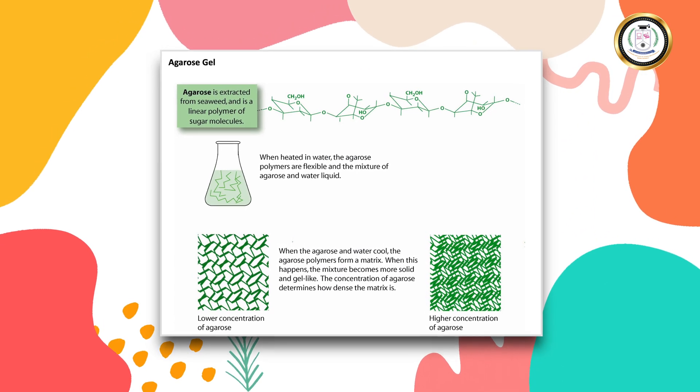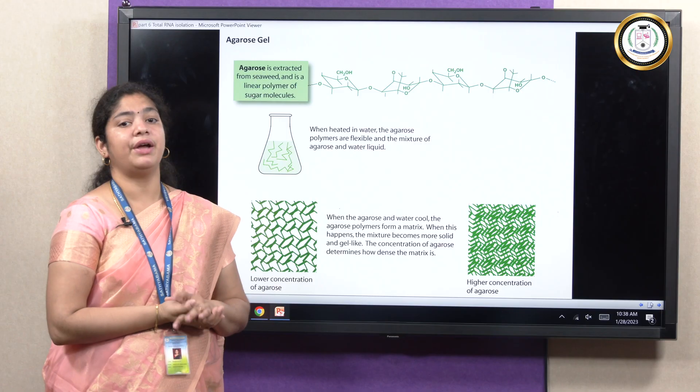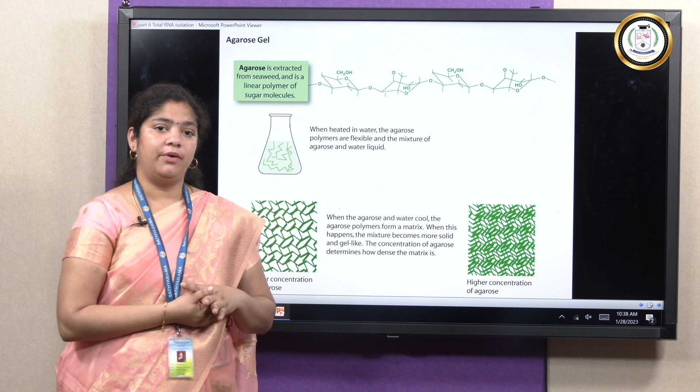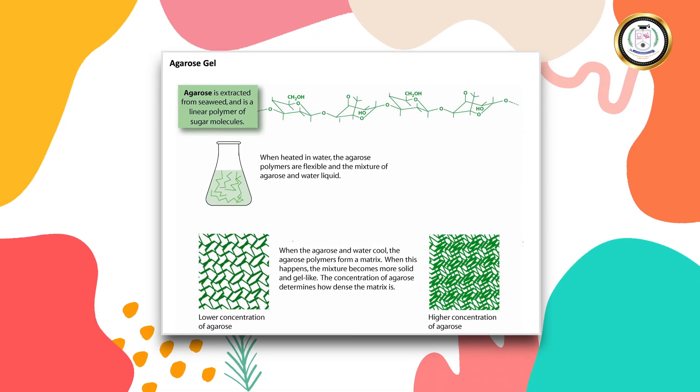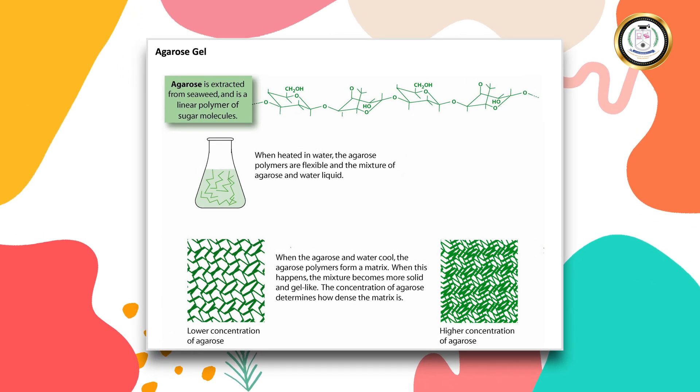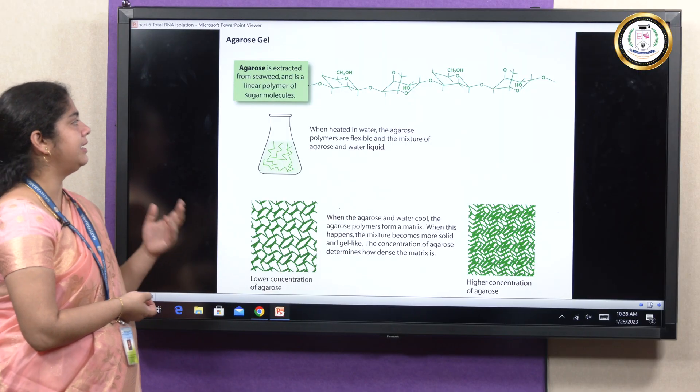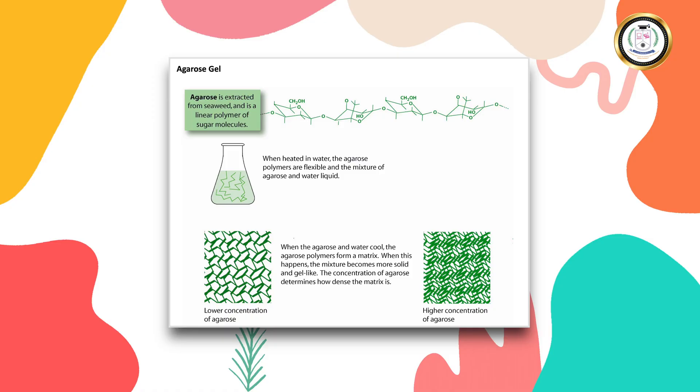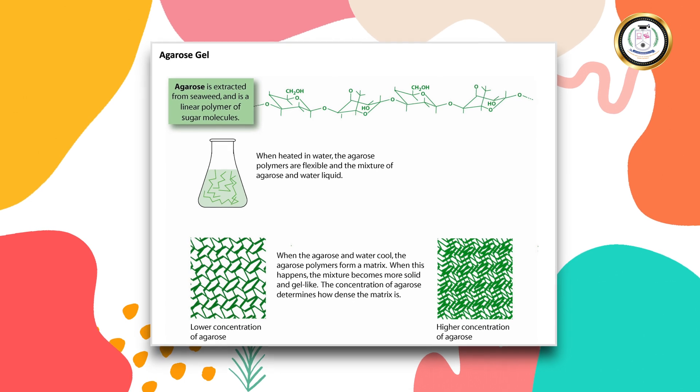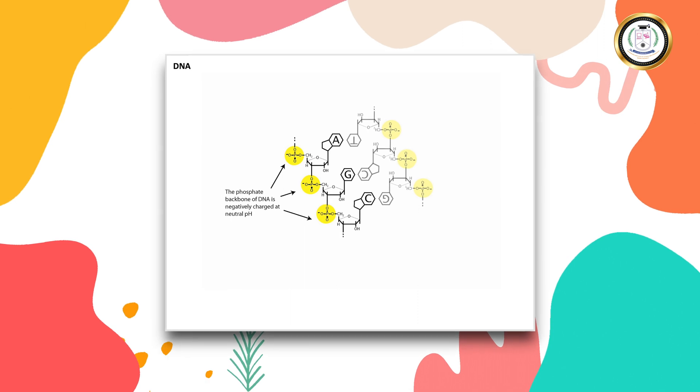So to check whether our total RNA is intact and there is no degradation, we have to perform agarose gel electrophoresis. This method is a very simple method where we use agarose gel and the agarose gel can be casted so that the nucleic acid content can be run very easily using this method. So agarose is a form of seaweed and it is like a linear polymer of sugar molecules. So when it is heated in water, it forms a flexible mixture of agarose, and when the temperature gets cooled down, it forms a jelly matrix.